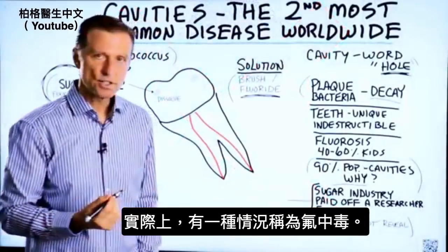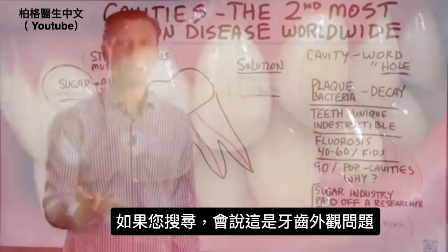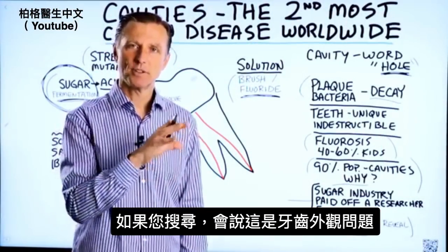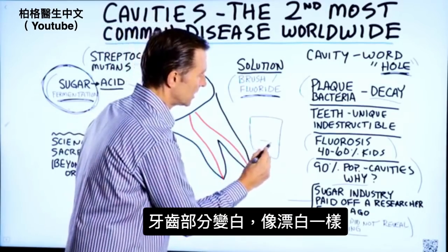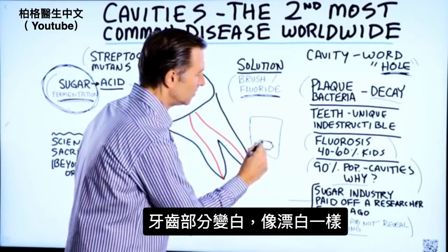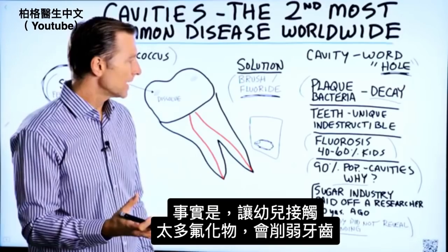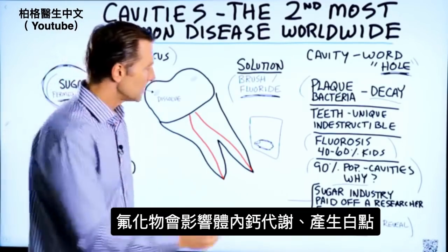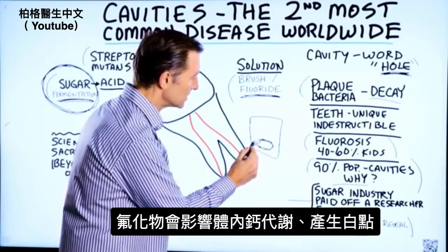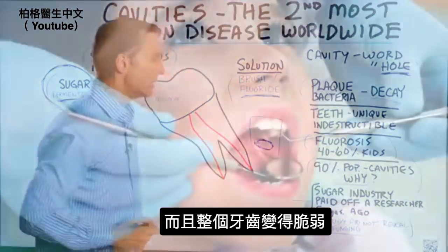In fact, there's a condition called fluorosis. If you look it up, it'll say it's a cosmetic problem with the tooth — part of the tooth turns excessively white, like a bleaching effect. The truth is that when you expose a young child to too much fluoride, it can weaken the teeth. It can affect calcium metabolism in your body and give this appearance. What's actually happening is the whole tooth is becoming weak.